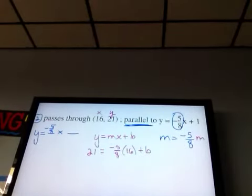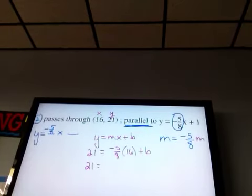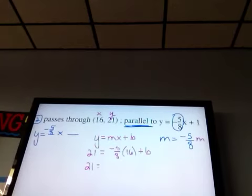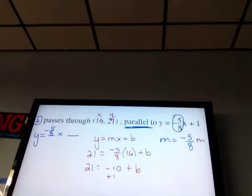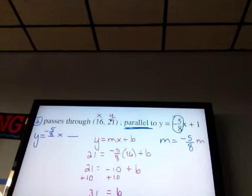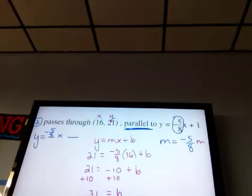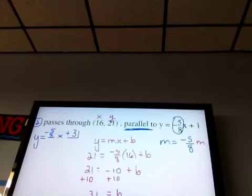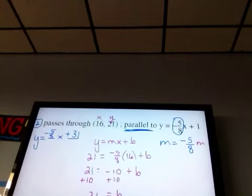And then I multiply negative 5/8 times 16. If you cannot do that mentally, then you need to make sure you know how to put it into your calculator. It's negative 10 plus b. And then add 10 to get b by itself. And b equals 31. And then I'm going to go fill that in to the other blank. So plus 31.